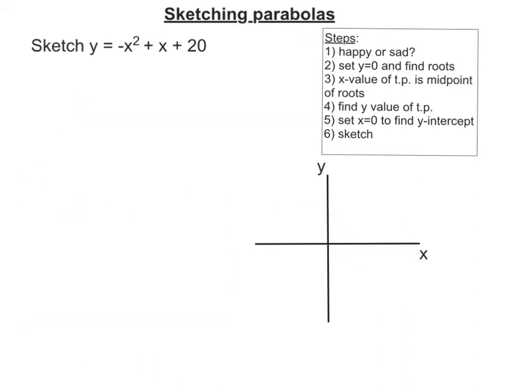Here's our second example: y equals minus x squared plus x plus 20. So happy or sad? Well, it's happy if the coefficient of x squared is positive. Well, this one's negative, so it's a sad curve.